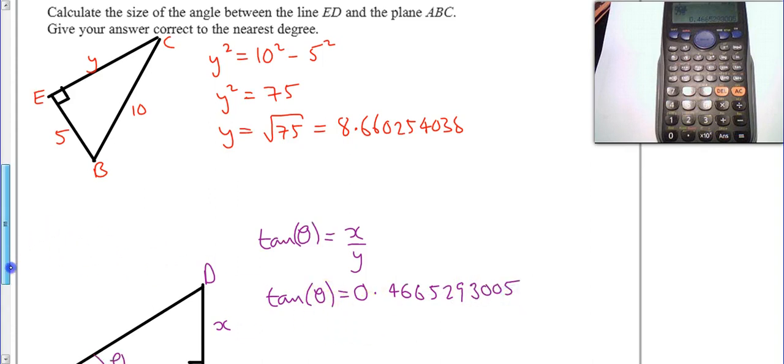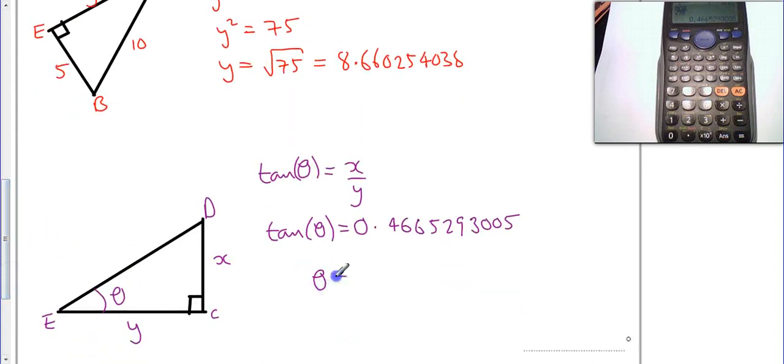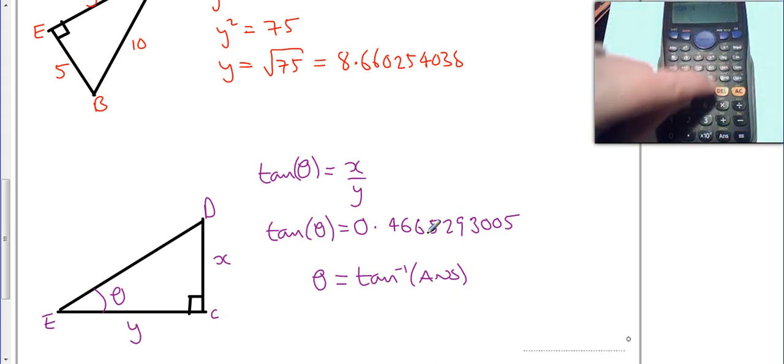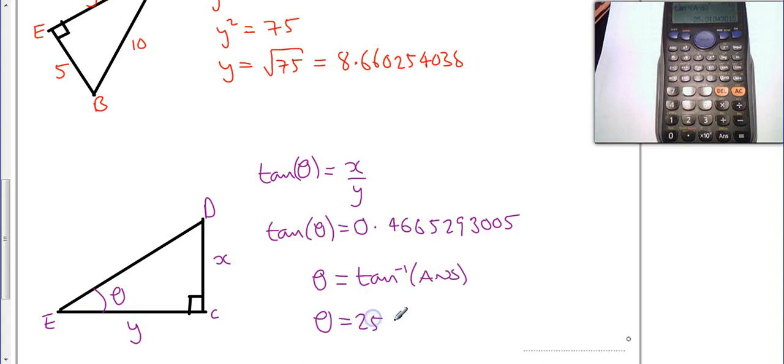So therefore to work out what my theta is, I'm going to use inverse tan. I'm going to use the answer part of my calculator now because it's now changed because it's done a new calculation. So shift, tan, answer. And I get theta to be 25.01043013. I've left this as exact - this is the exact answer we can get because I've not rounded any answers yet.